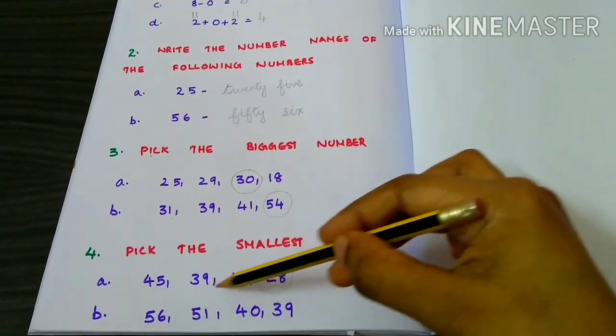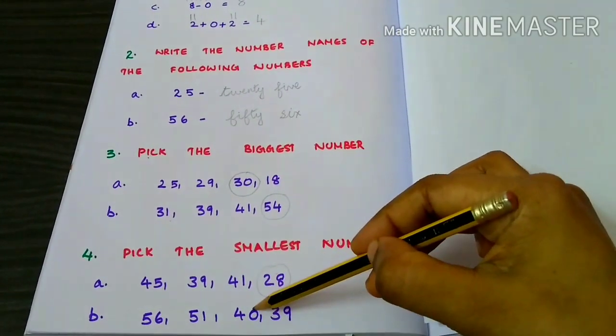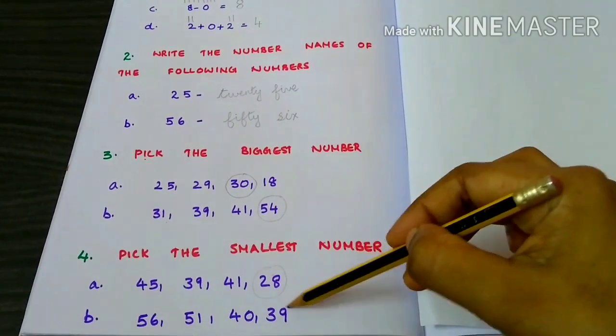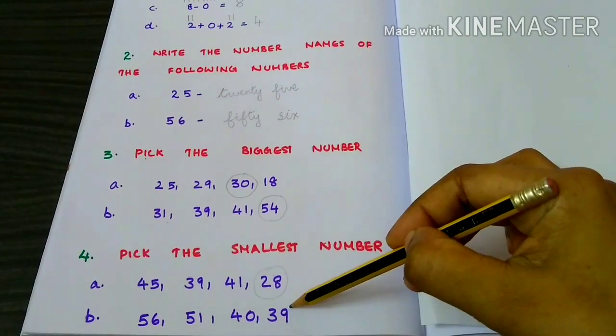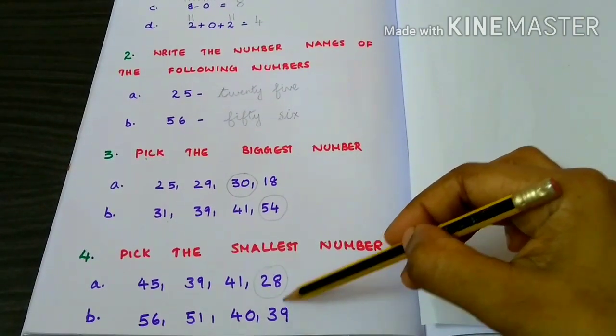56, 51, 40, 39. 39 is the smallest number.